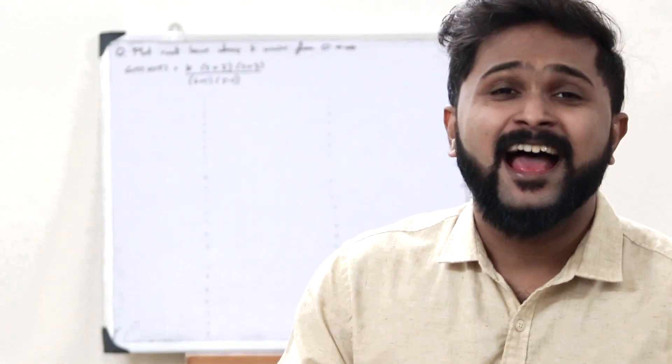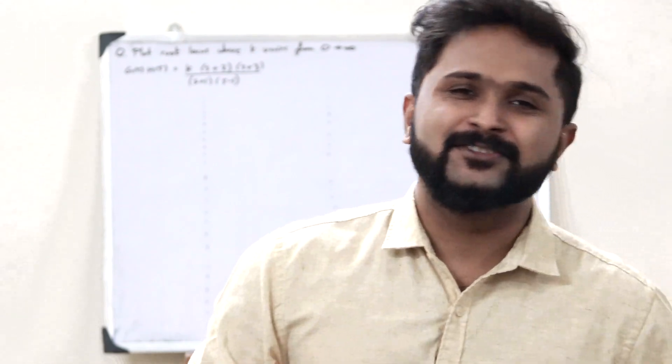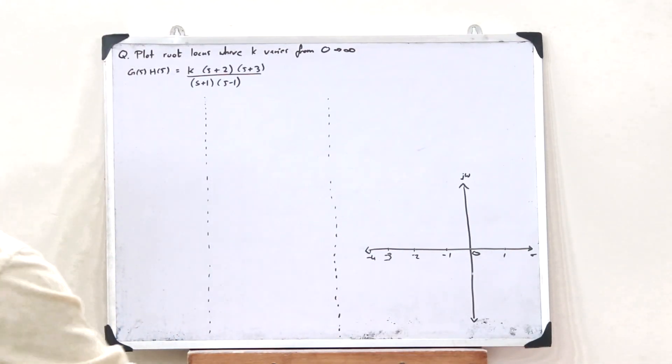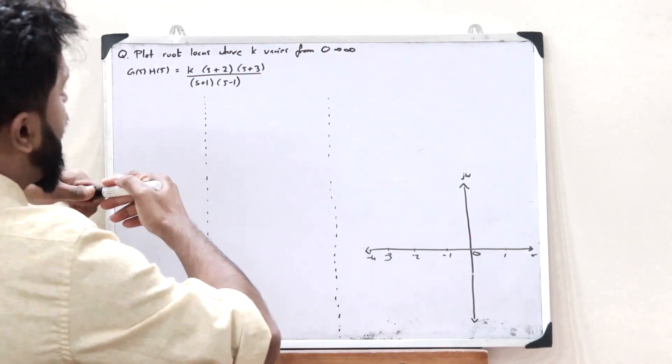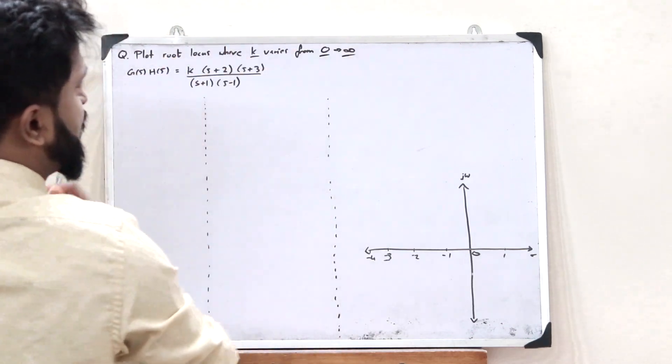In the previous video, we saw how to plot the root locus of a particular control system. If you haven't watched that video yet, I'll leave the link in the description below — please watch it first. My name is Rishi Ramjo, and welcome to the Backbench Engineering Community. In this video, we'll be discussing another problem in which we plot the root locus of a particular control system, where the constant k varies from 0 to infinite.